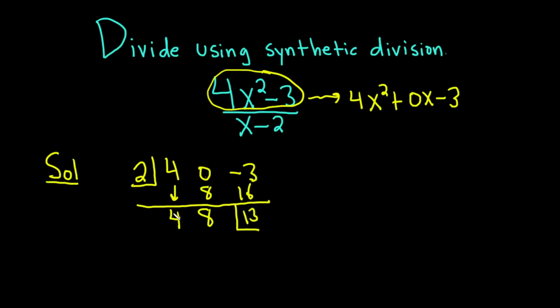Again, bring down the 4. 4 times 2 is 8, and then you add. 0 plus 8 is 8. 8 times 2 is 16, and then you add, you get 13.